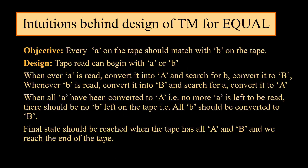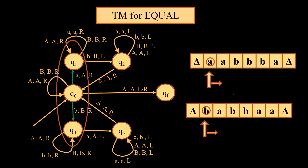Whenever A is read, convert it into capital A and start searching for B, then convert it into capital B. Likewise, if we come across B, convert it into capital B and search for small a, then convert it into capital A. When all the A's have been converted to capital A — that is, no more small a's left — there should be no B left on the tape. We will say that the number of A's and number of B's in the machine are the same.